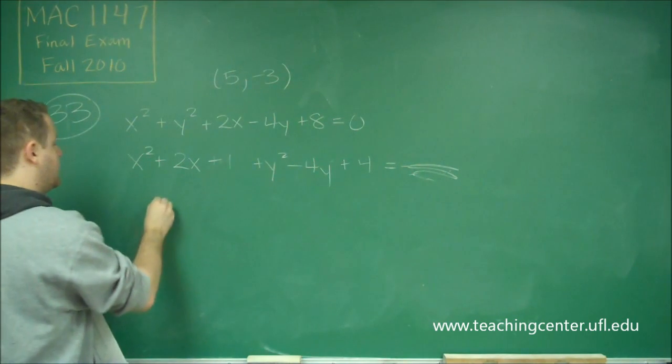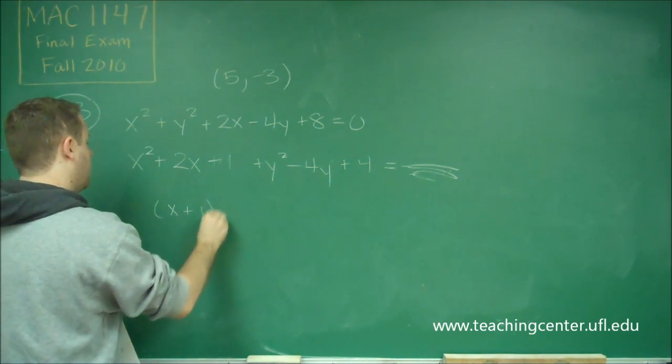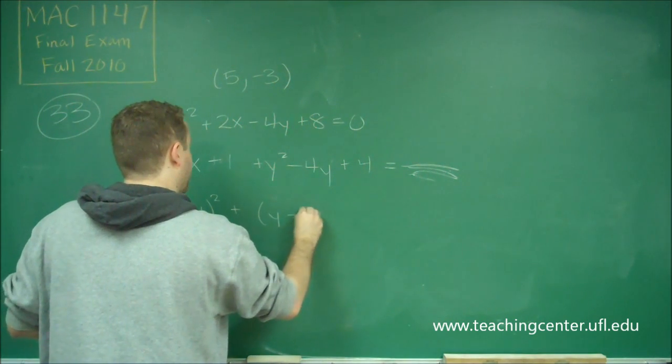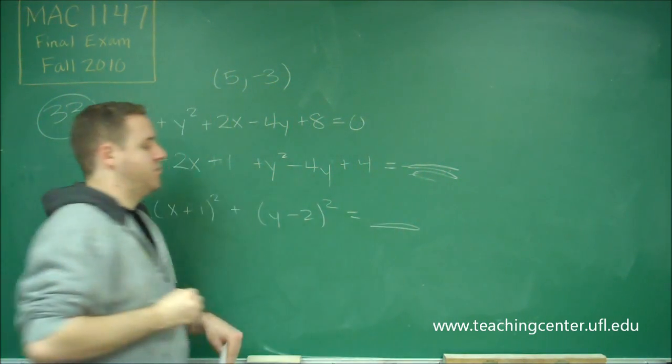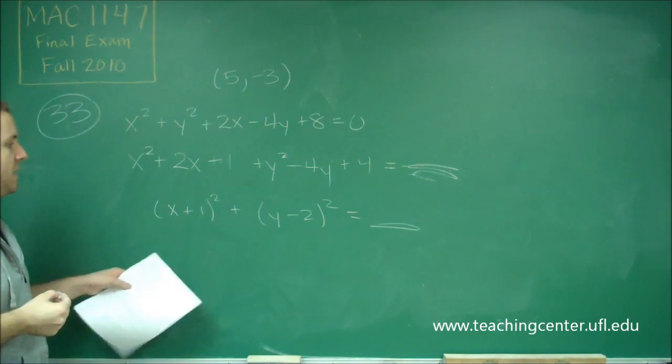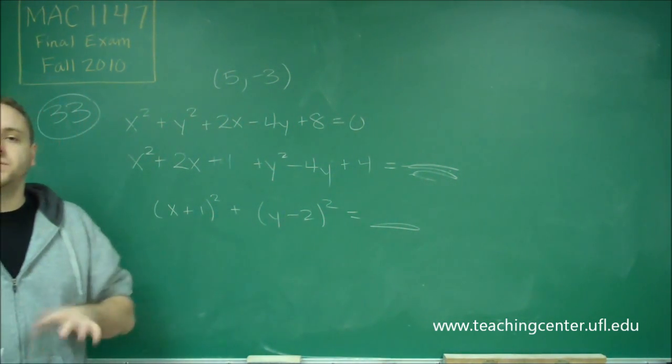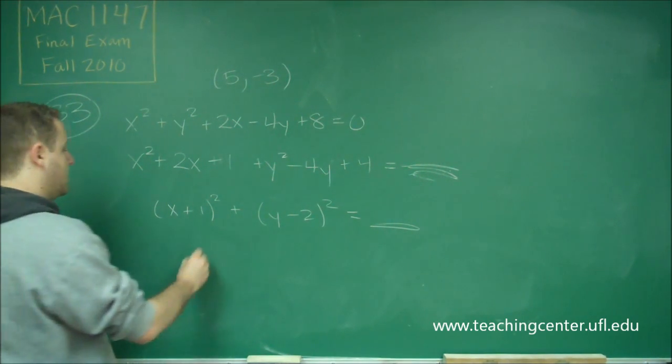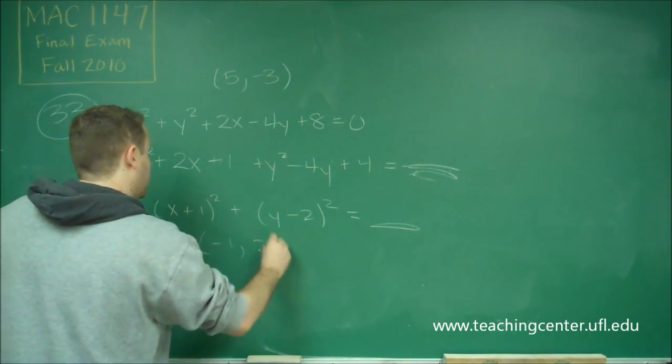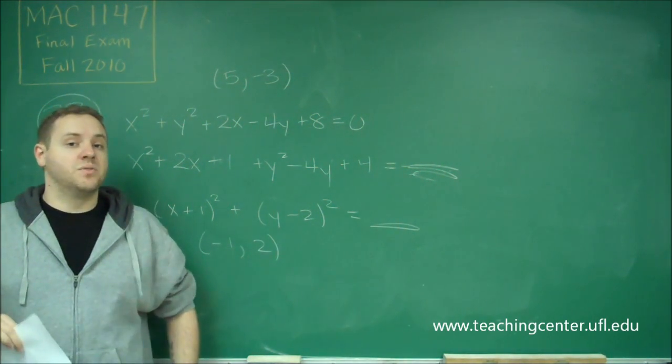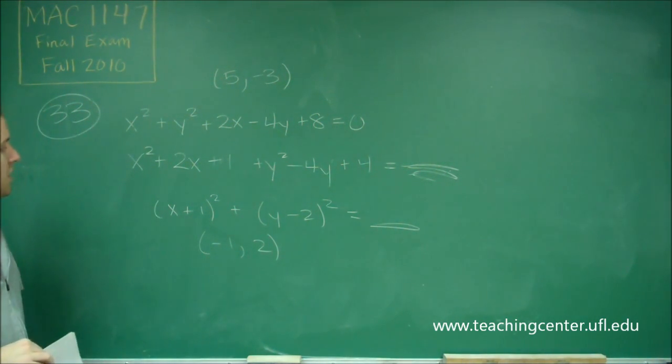So finally, these can now factor into x plus 1 squared, plus y minus 2 squared, equals, and we would have some radius there. But now you can see, we didn't need to find that, because the center just comes from these two factors anyway. So our center point here is negative 1, 2. Remember, it's whatever makes these terms equal to 0.